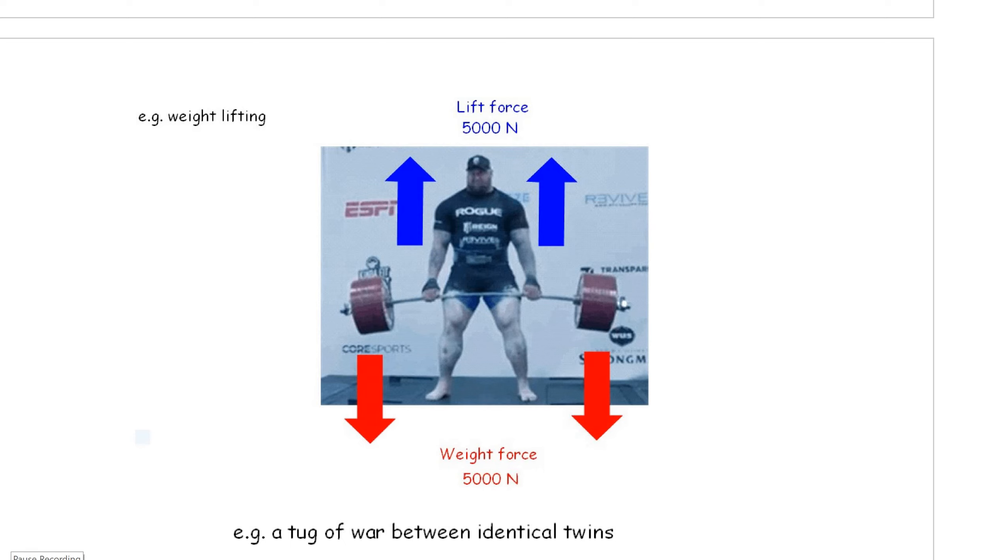Here's another example. Weight lifting. There's a massive weight force of 5,000 newtons downwards. And this individual must be very strong. He's lifting up with an equal but opposite force. And the forces are balanced.